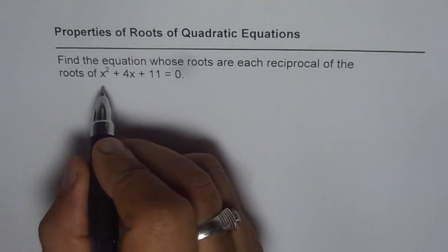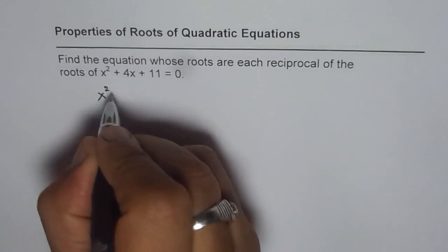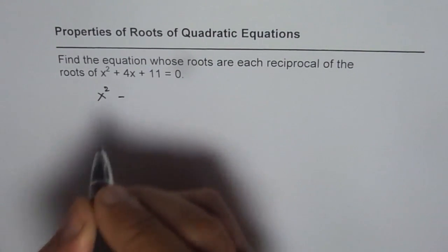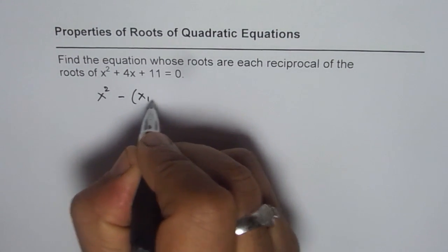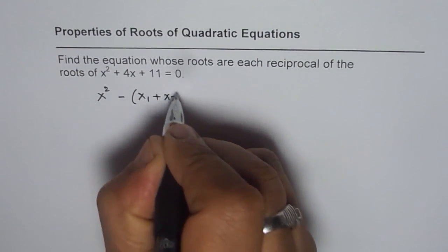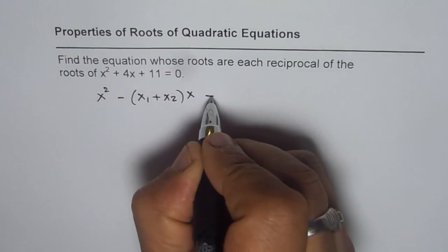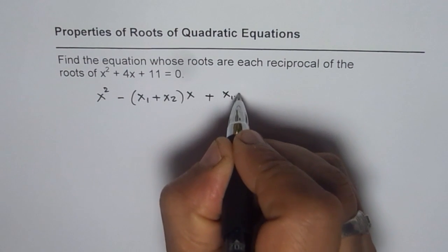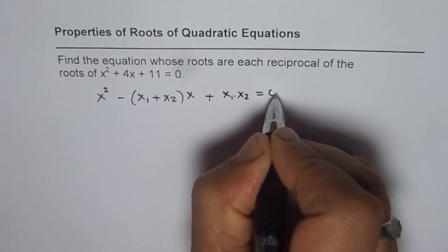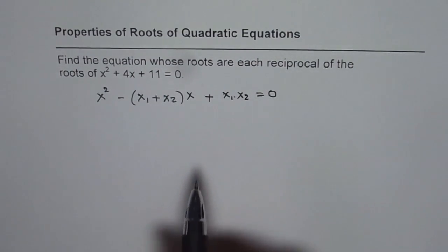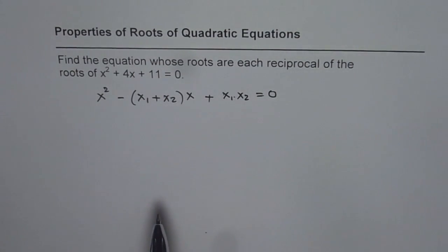As you know, we can write down a quadratic equation as x² - (x₁ + x₂)x + x₁x₂ = 0, where x₁ and x₂ are roots of the quadratic equation. So that is a way in which we can write down a quadratic function.